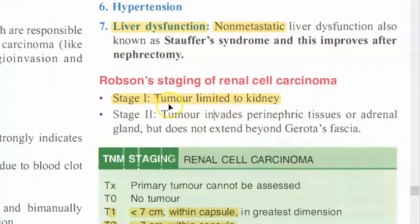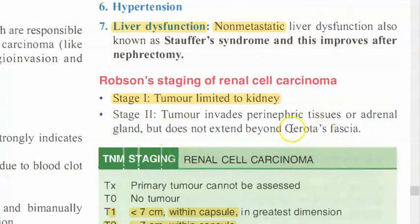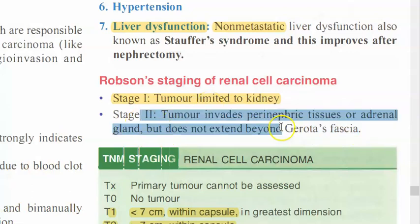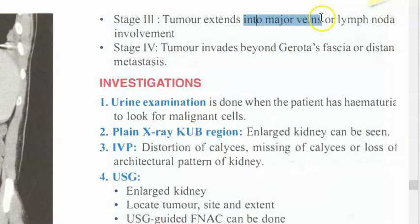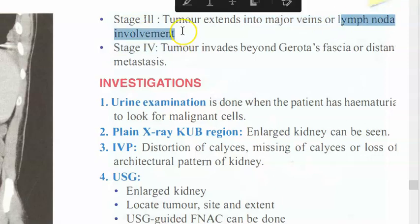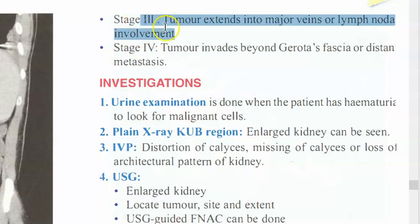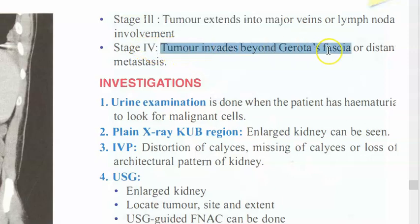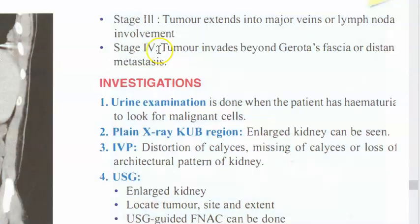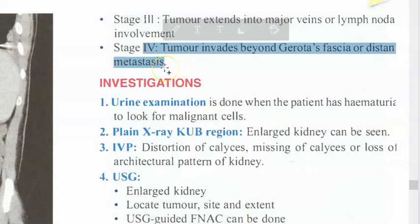To summarize staging: Stage 1 - tumor limited to kidney (T1). Stage 2 - tumor limited to kidney (T2), may invade perinephric tissue or adrenal gland but not beyond Gerota's fascia. Stage 3 - extends to major veins like IVC or lymph node involvement (T3/N1). Stage 4 - tumor invades beyond Gerota's fascia (T4) or distant metastasis, or involvement beyond a single regional lymph node (N2).